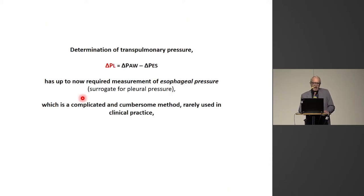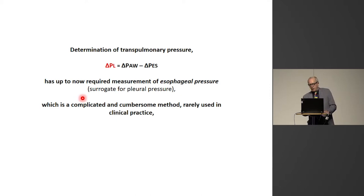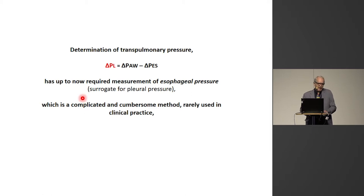Up to now, determination of the transpulmonary pressure requires the use of the esophageal catheter. This is a catheter that is both complicated and cumbersome to use, and it is rarely used in clinical practice. So we started looking at other ways of separating lung and chest wall mechanics.